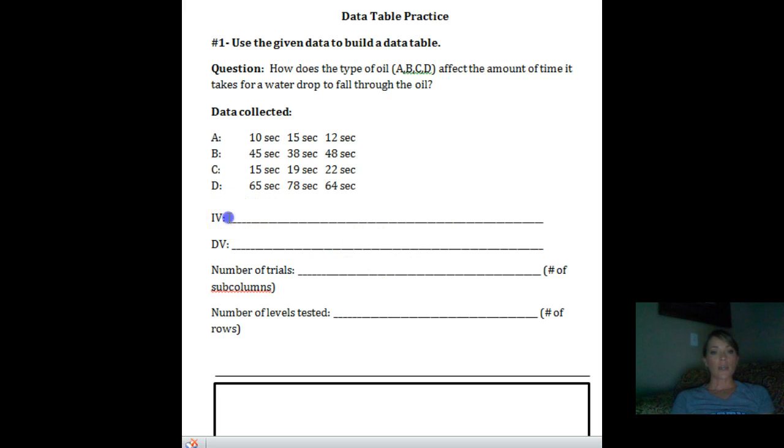So the first thing that you're going to do is identify the independent variable. So the independent variable for this experiment is going to be the type of oil. And I'm going to go ahead and put the different types that they included there. And I think I want my answers to be in red. So I'm going to put my font in red there.